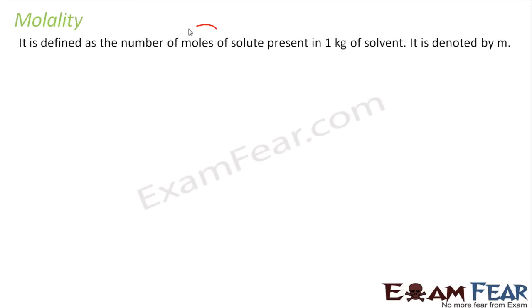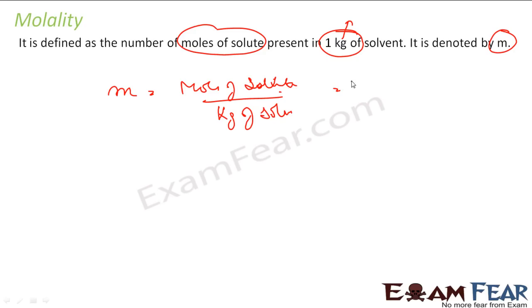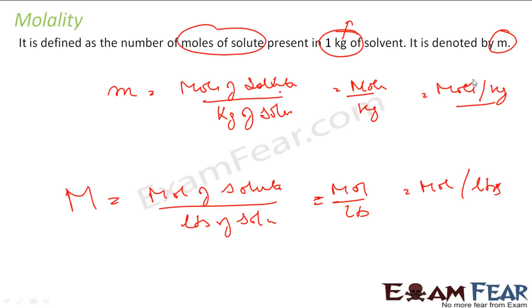Then we have something called molality. Molality is the number of moles of solute present in 1 kg of solvent. Note: in molarity it was 1 liter of solution; here it is 1 kg of solvent. It is denoted by small m. So small m = moles of solute divided by kg of solvent, and the unit is moles per kg. In case of molarity (capital M), the unit was moles per liter.